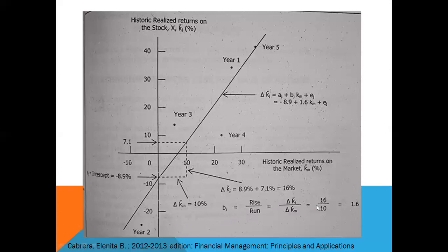So what's that? This is 16, because 7.1 minus negative 8.9 equals 16. And the change in X, or the change in run, so that is 10 (10 minus 0), which equals 1.6.